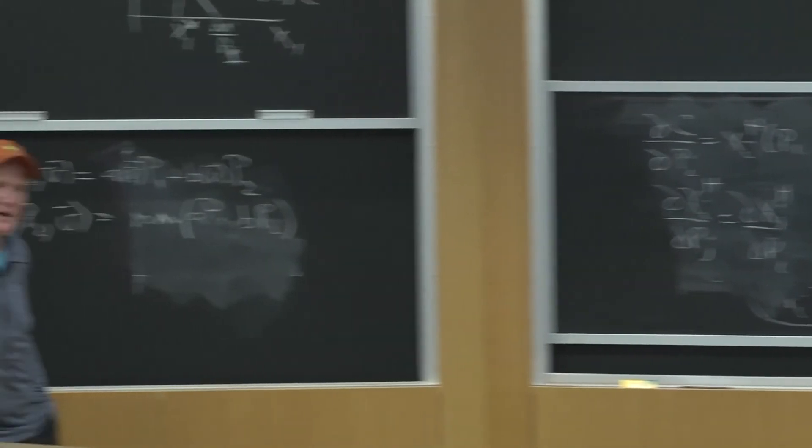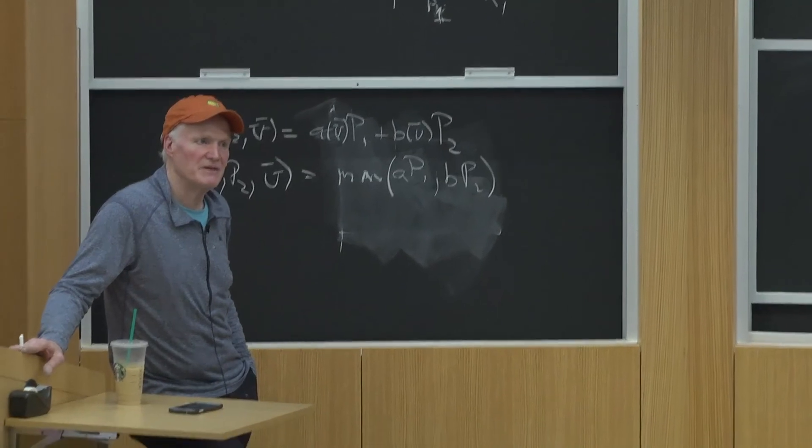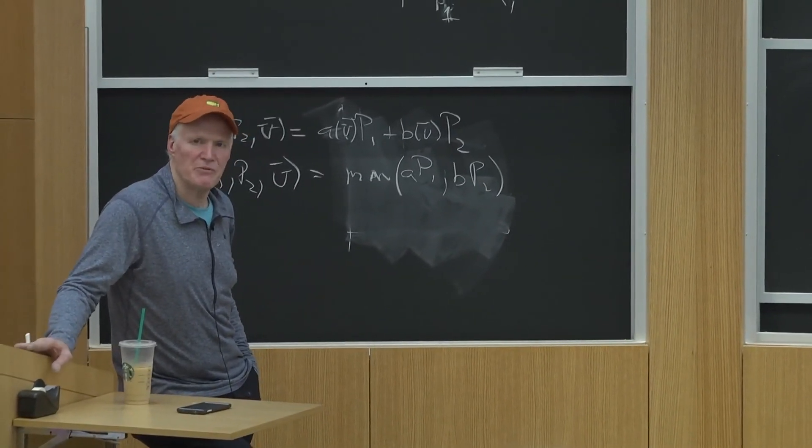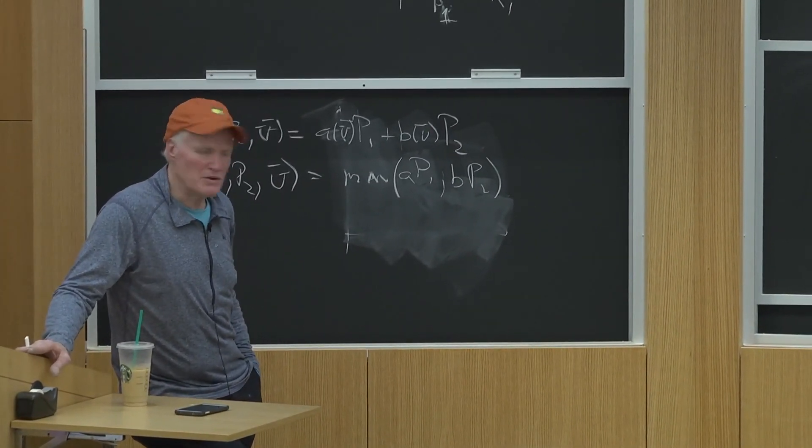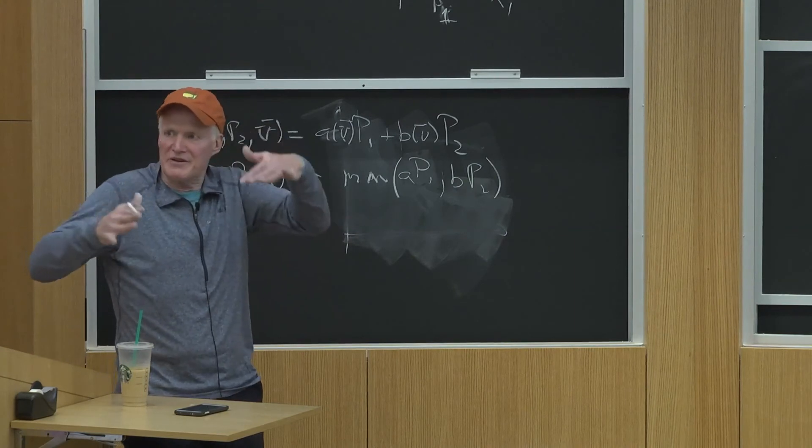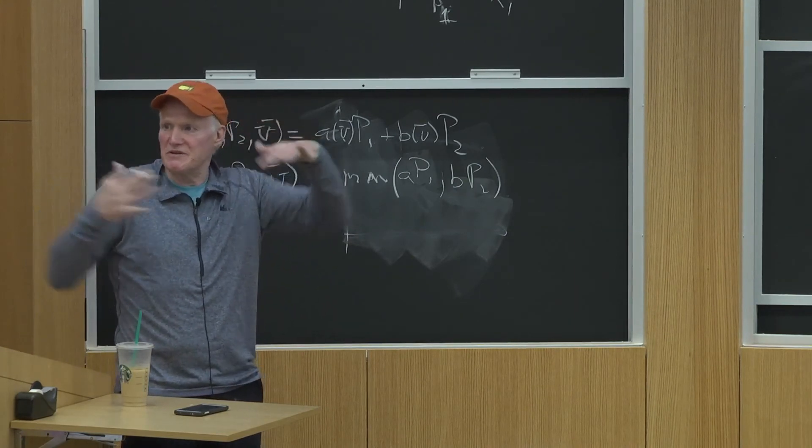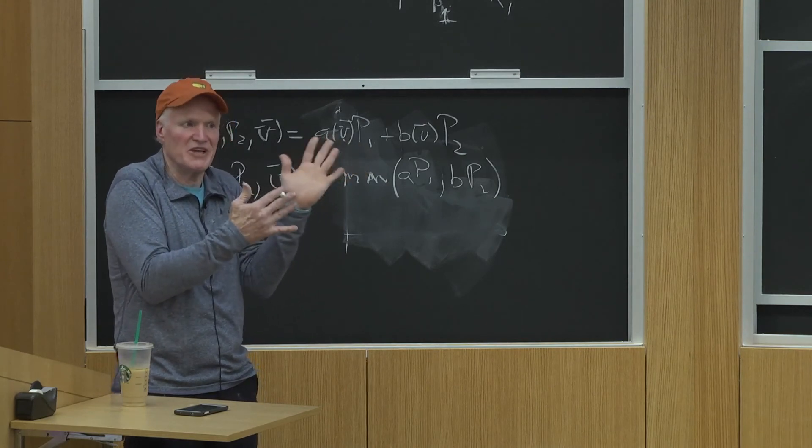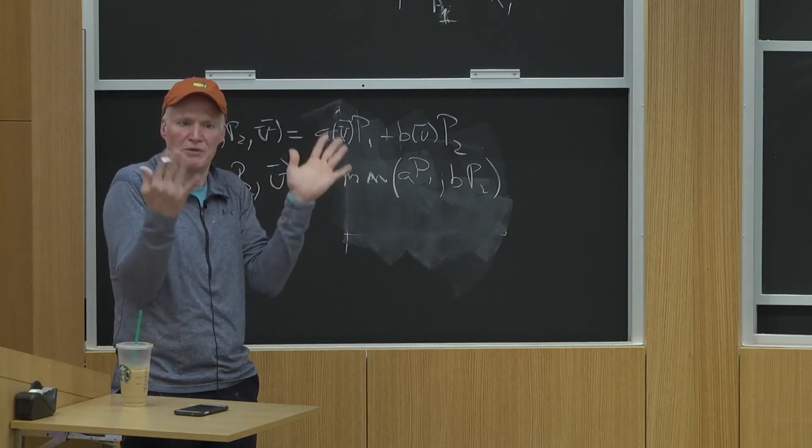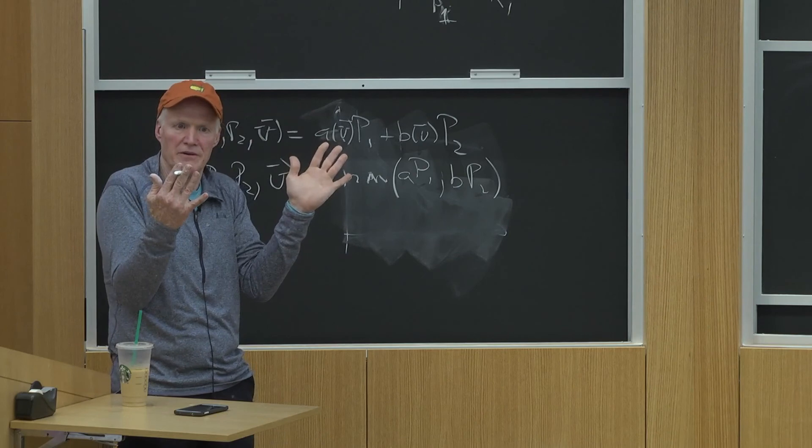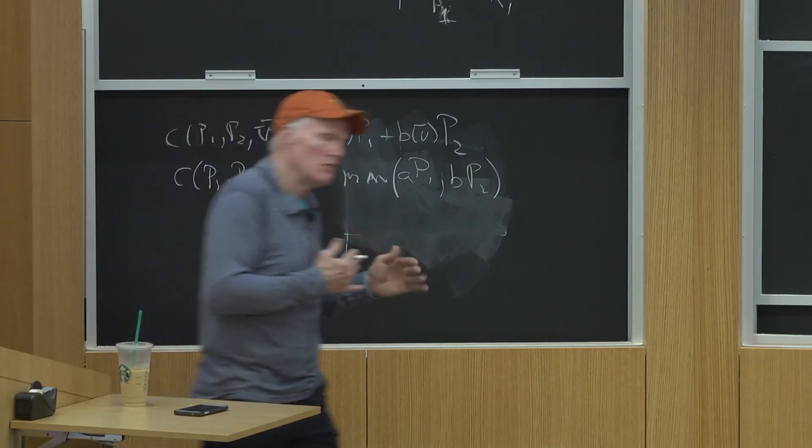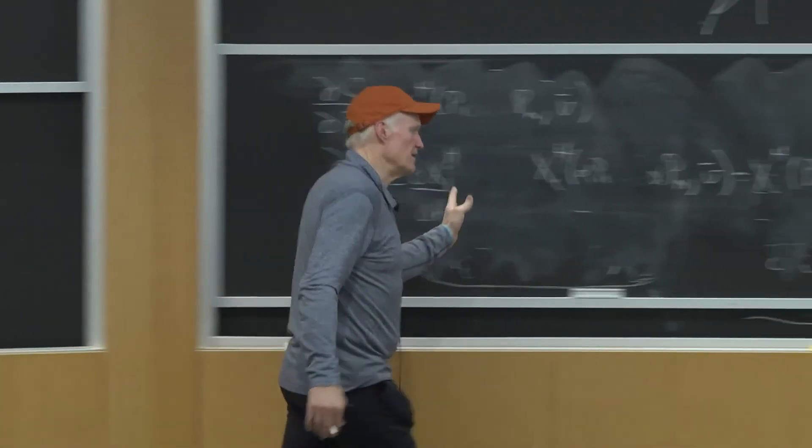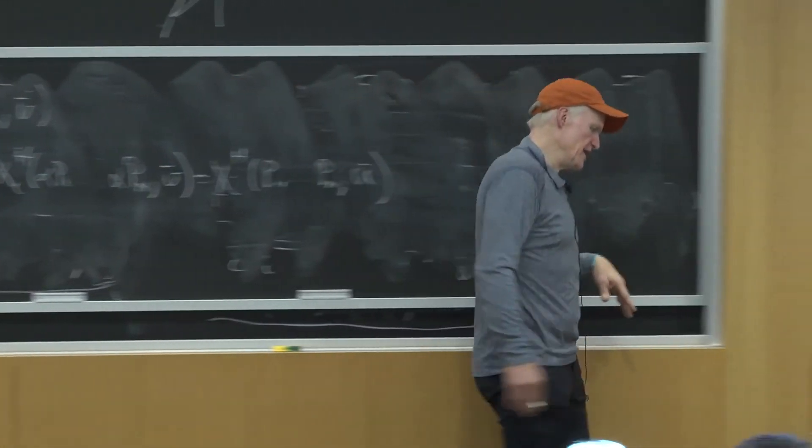Right? It's like, my choices only depend on the choices I have. I can have some very weird other properties, but as long as my budget set determines my choices, these homogeneity properties will hold. Because nothing changed about your budget set when you multiplied all the prices by the same amount. The opportunities you had haven't changed at all. So that's homogeneity.